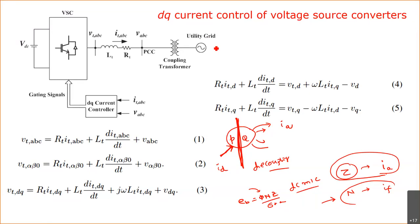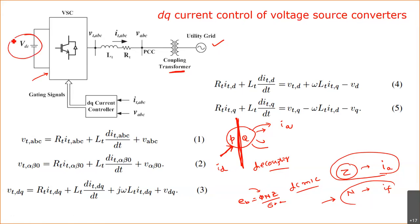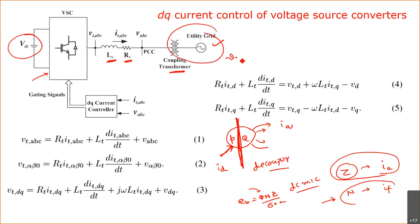Let us review the circuit setup. We have the grid voltage, a coupling transformer, and a grid-integrated inverter. The DC side may be a PV source or any load. We have filter inductance L_F, and transformer impedance L_T and R_T. The grid voltage is V_s(ABC), and the inverter terminal voltages are V_T(ABC).